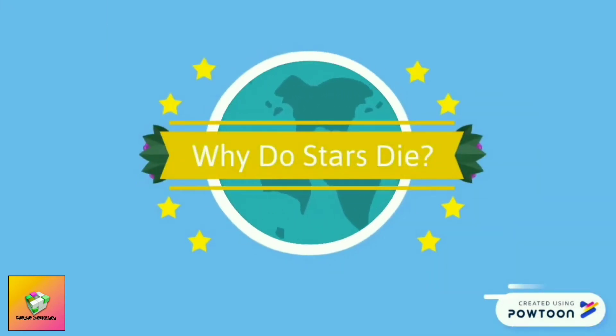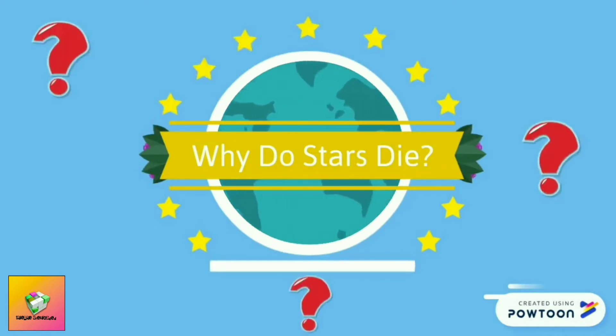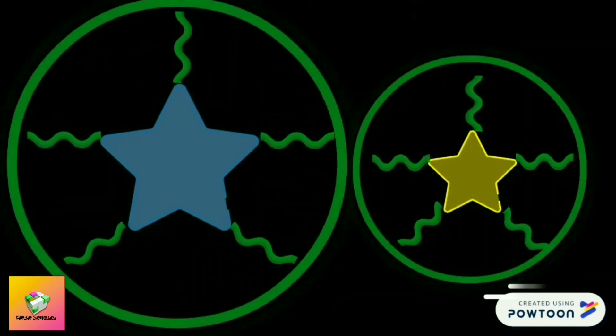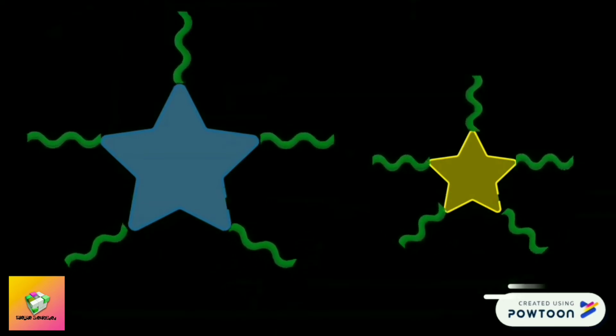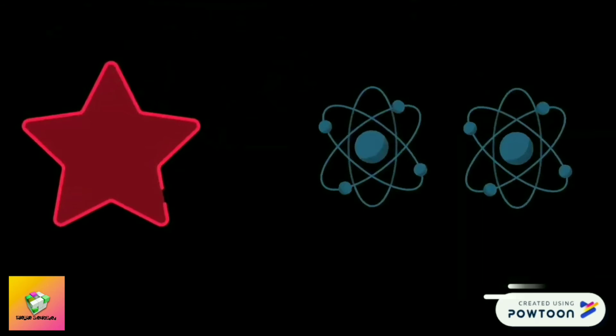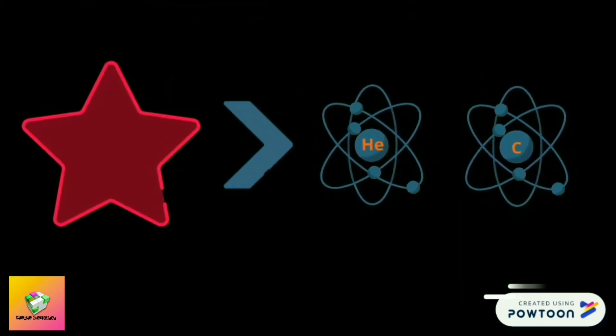Why do stars die? Stars die due to them draining their nuclear fuel. The effect of the event at the end of a star's life depends on its mass — the bigger the mass, the more quickly they use their hydrogen fuel. Some massive stars are hot enough to fuse heavier elements such as helium and carbon. Once they run out of fuel completely, the star destructs and the outer layer explodes as what we call a supernova.